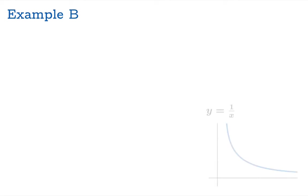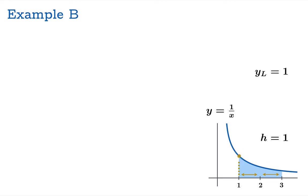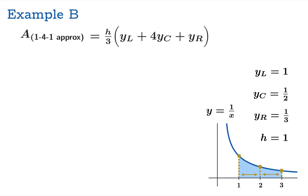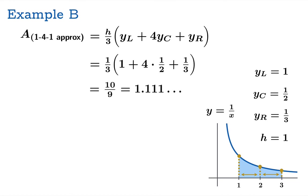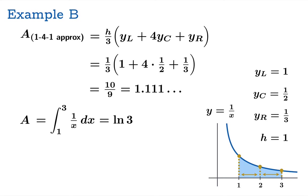Let's try another example: the reciprocal function on the interval from 1 to 3. The midpoint is 2, so the half width is 1. The function values are just the reciprocals of 1, 2, and 3 respectively. Plugging into the 1-4-1 template and carefully working out the details gives 10/9, or about 1.111. The actual area from the fundamental theorem uses the antiderivative ln(x): plugging in 3 and 1 and subtracting gives ln(3), which is approximately 1.0986.